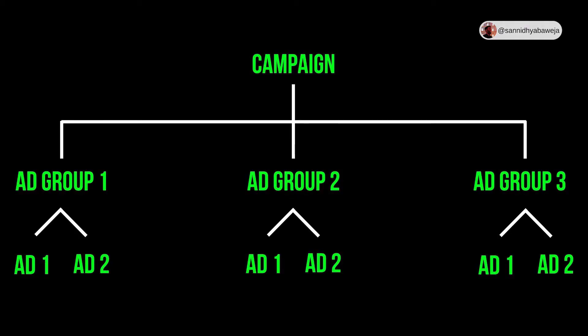The first level in the Google Ads hierarchy is the Campaign, the second is the Ad Group, and the third is Ads. You can have multiple campaigns in your ad account, multiple ad groups within one campaign, and multiple ads within just one ad group.